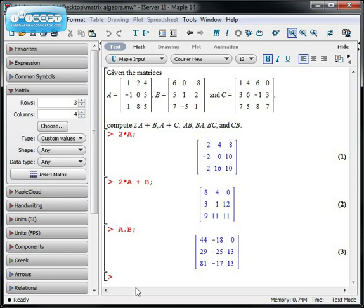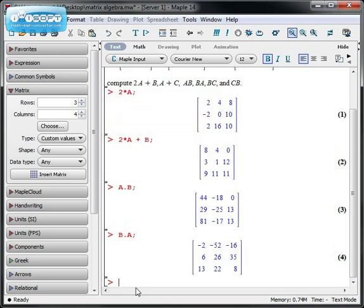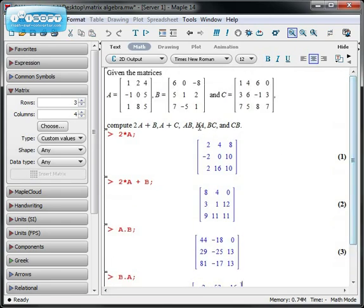If I wanted to do B times A, I would do B times A with a period again. And I would come up with this matrix. And once again, notice that matrix multiplication is not commutative. These are very different looking entries right here.